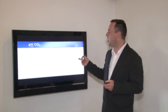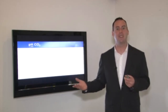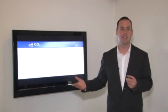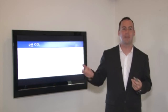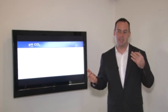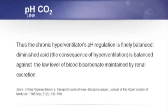Bicarbonate is sacrificed — dumped by the kidneys — to maintain pH back to normal. But when we lose bicarbonate, we're stuck in a state of chronic hyperventilation. For the chronic hyperventilator, pH regulation is finely balanced: diminished acid, which is the consequence of hyperventilation, is balanced by a low level of blood bicarbonate maintained by the kidneys.